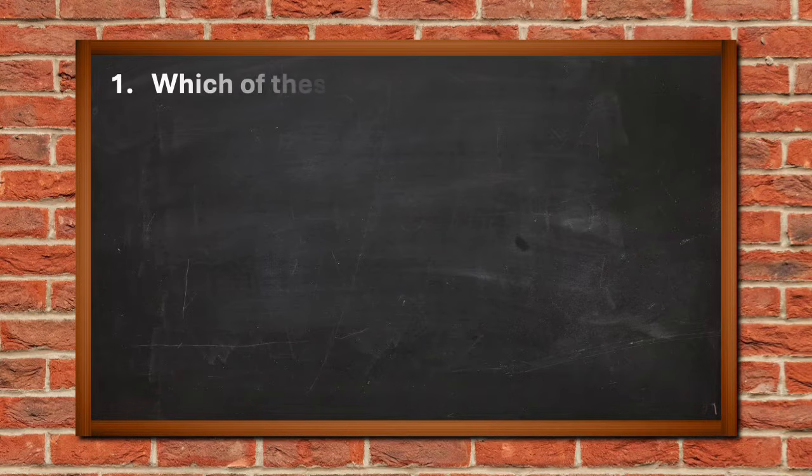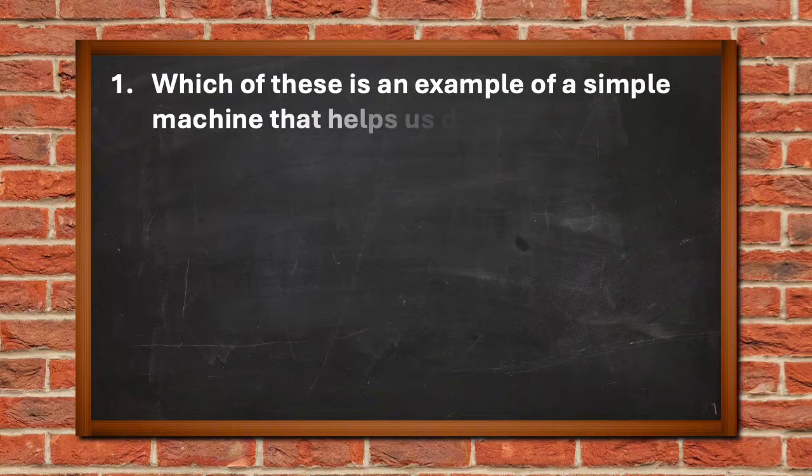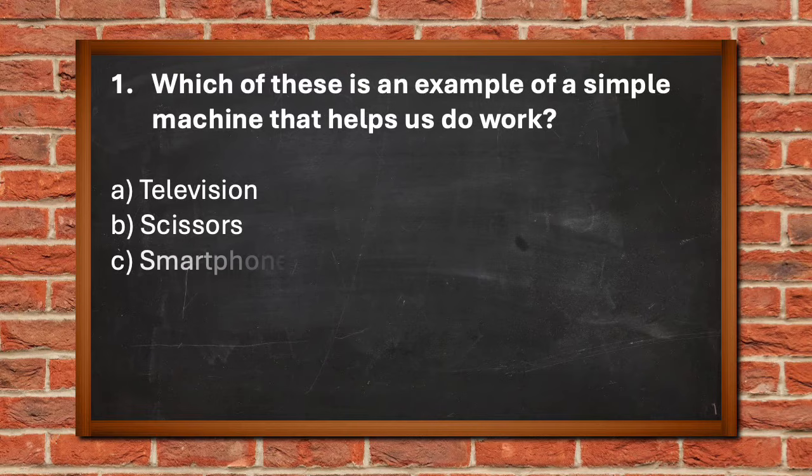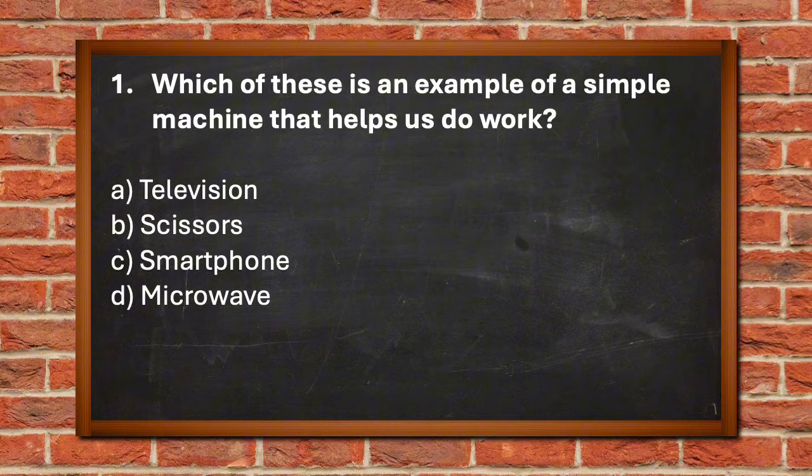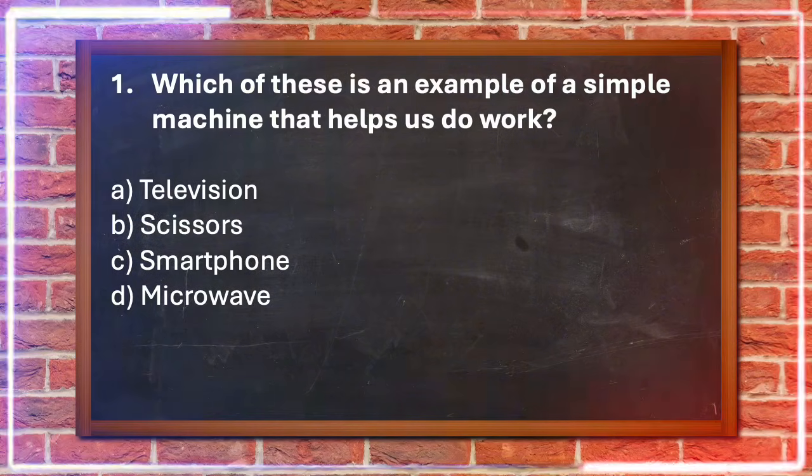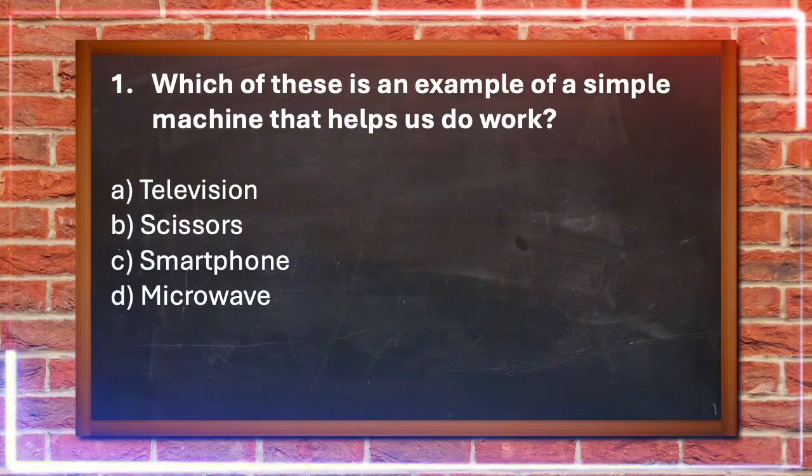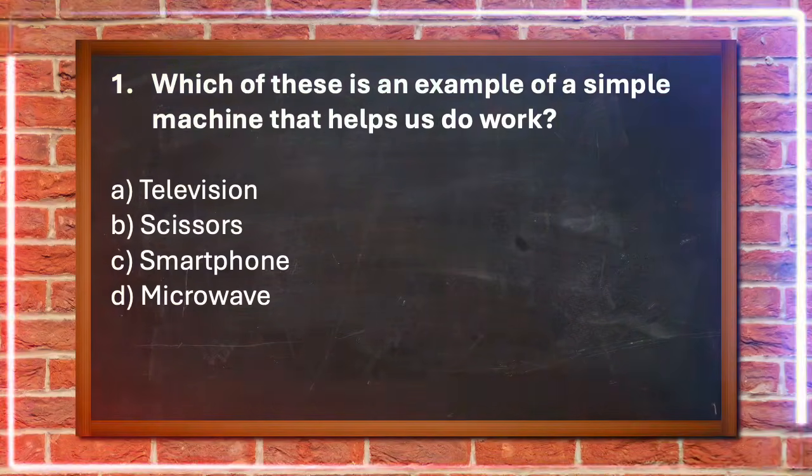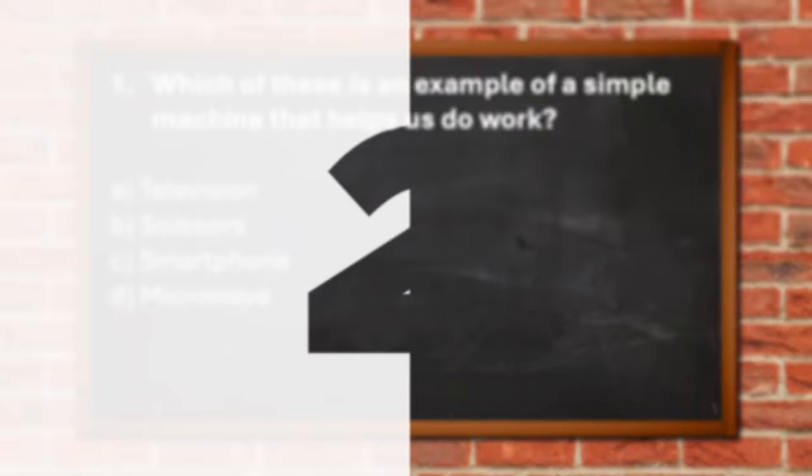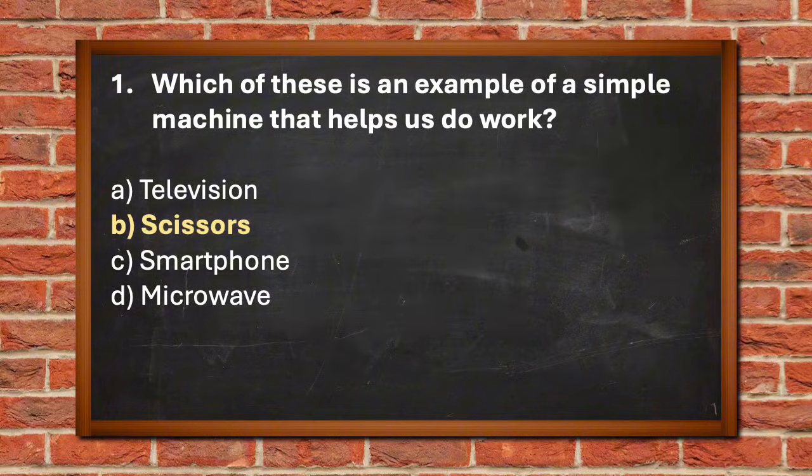Number 1. Which of these is an example of a simple machine that helps us do work? A. Television, B. Scissors, C. Smartphone, D. Microwave. The answer is B. Scissors.